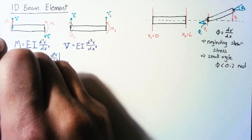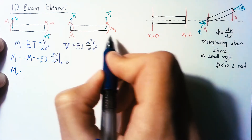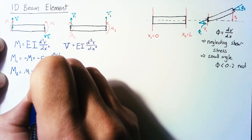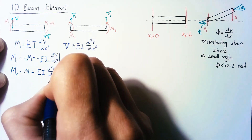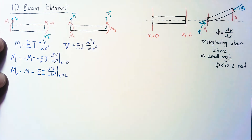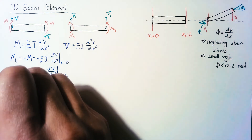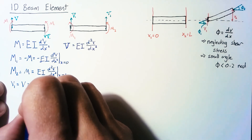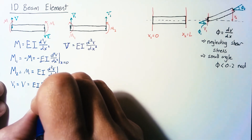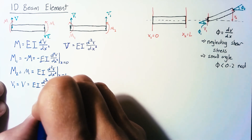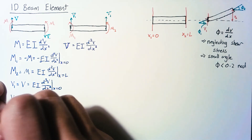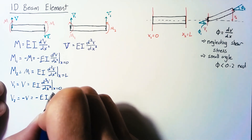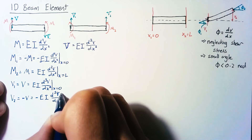Then we can do the same thing for m2, which is a positive m since both are in the same direction — that's EI times the second derivative, evaluated at x equals l. For v1 we have a positive shear, so we get EI times the third derivative evaluated at x equals 0. And v2 is negative, so we end up with negative EI times the same third derivative, evaluated at x equals l.